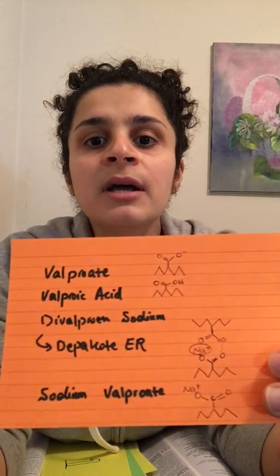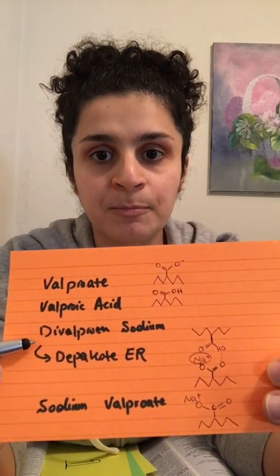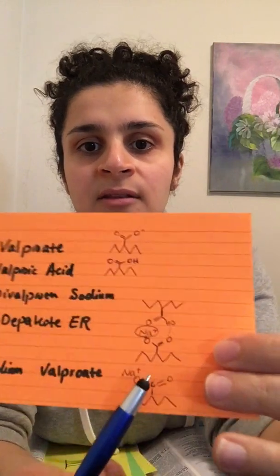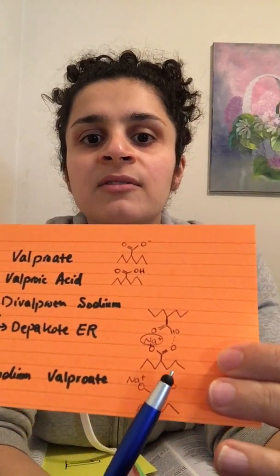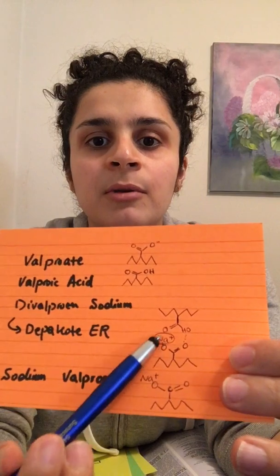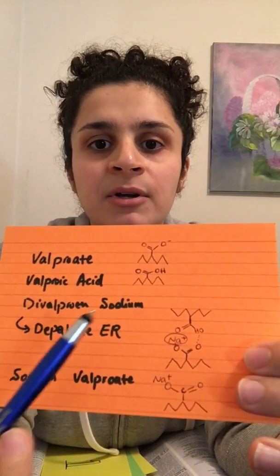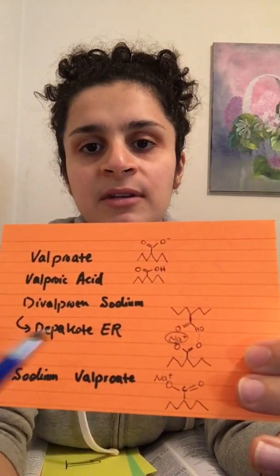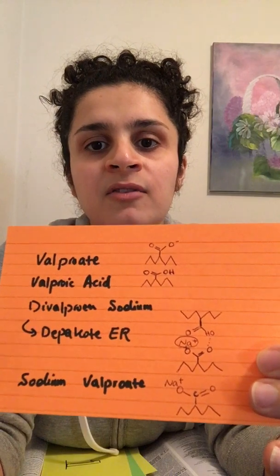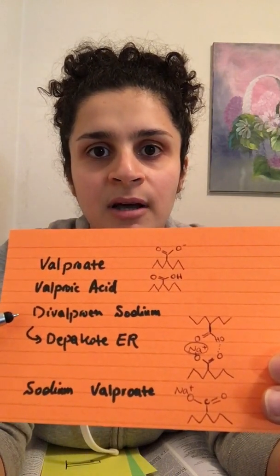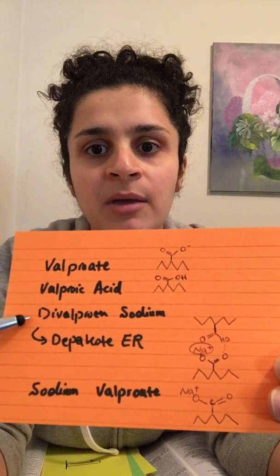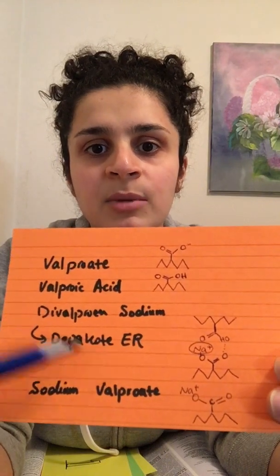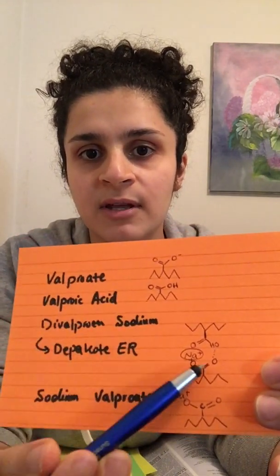You may have heard of valproic sodium, aka Depakote. This molecule has two valproate molecules with a sodium in the middle. Clinically, why is it different? Because this molecule causes fewer gastric side effects compared to valproic acid alone, so we may prefer Depakote over Depakene for that reason.